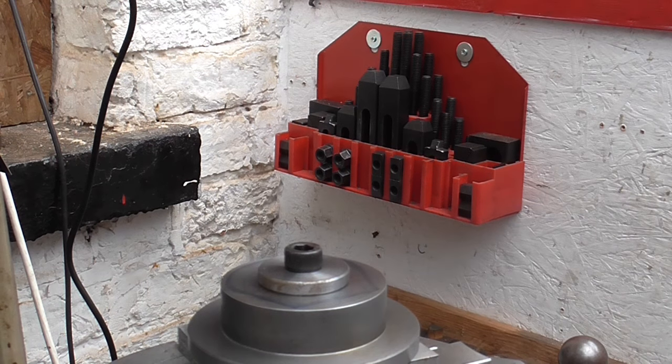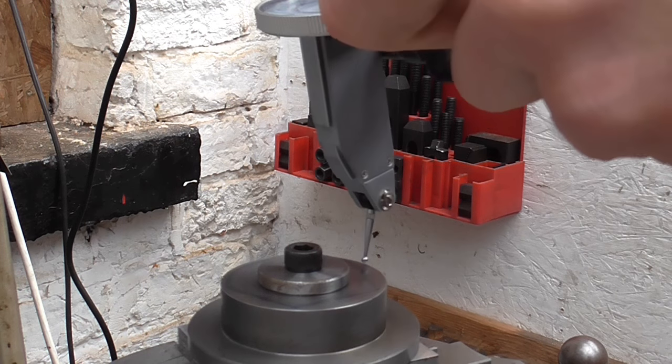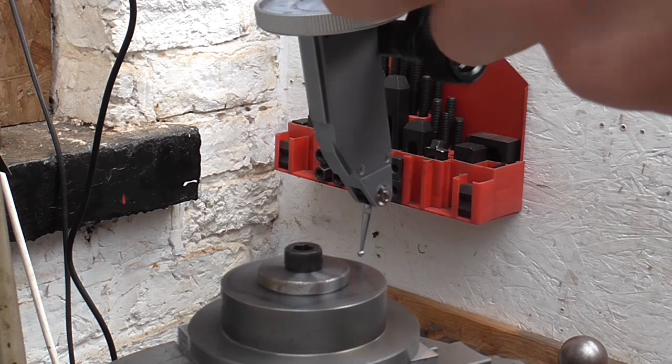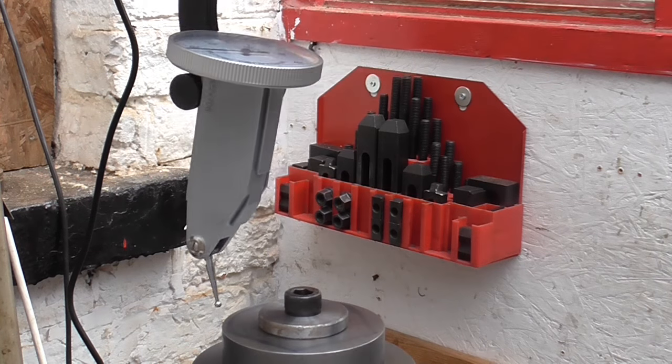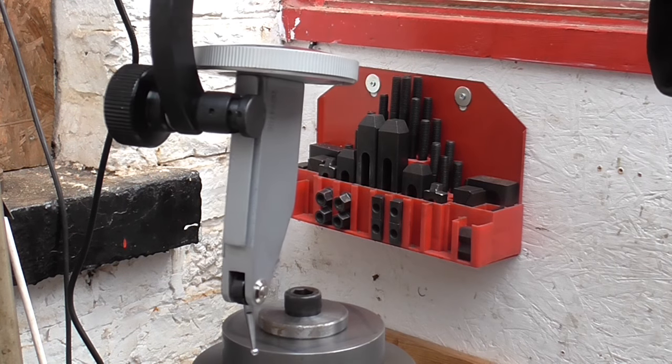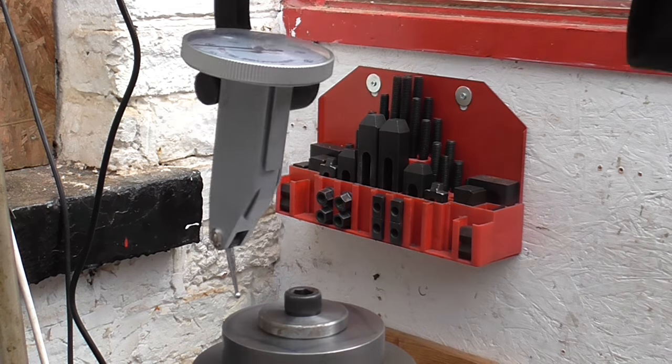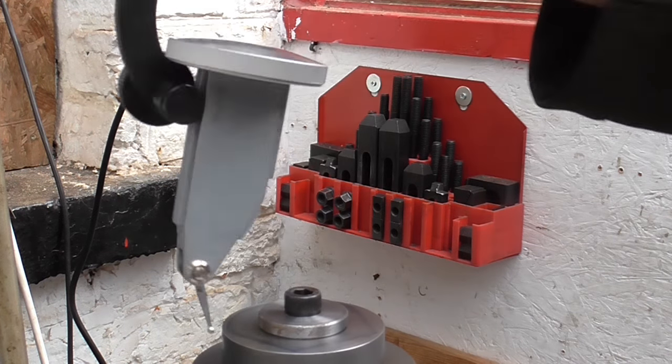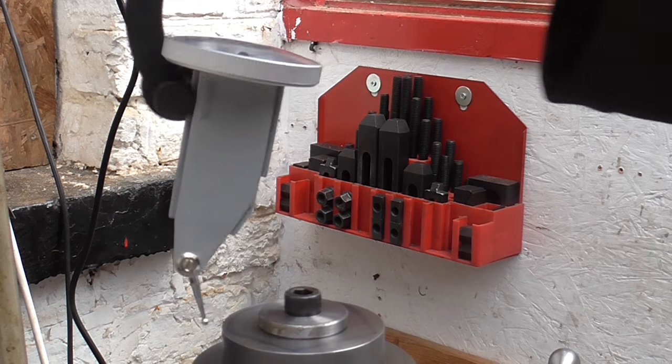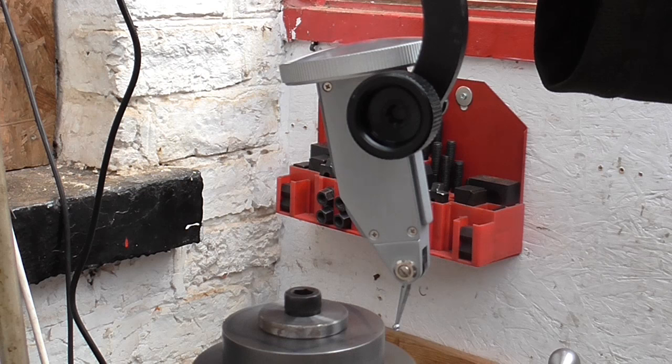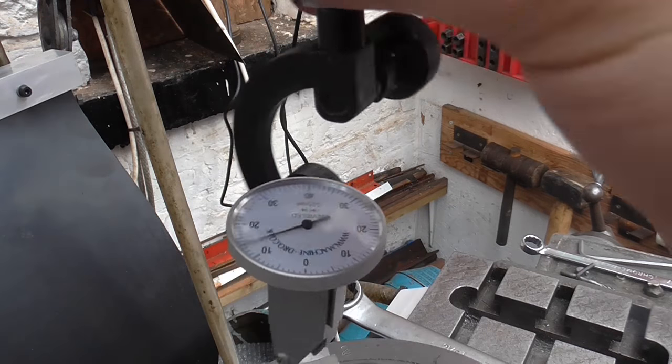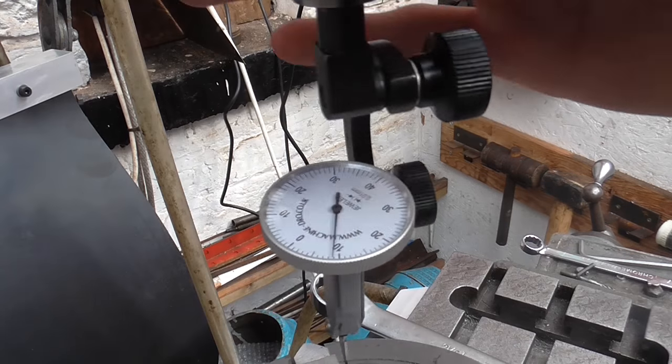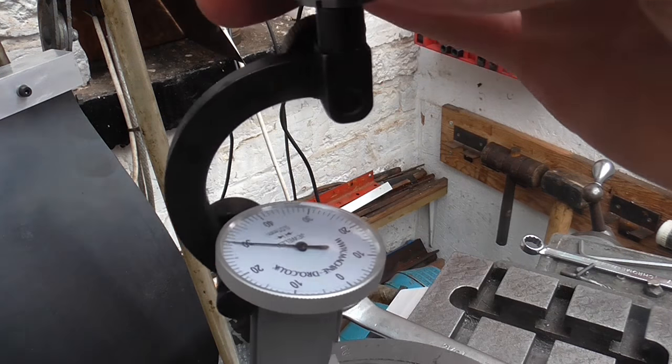So as ever the first thing to do is to find the datum and in this case I'm going to use the centre of the component. So I've got a clock here and first of all I'm going to find it by eye and then bring the clock in. Okay and the first thing I like to do is just run it round and check that the needle is within its range of travel for the whole way round.